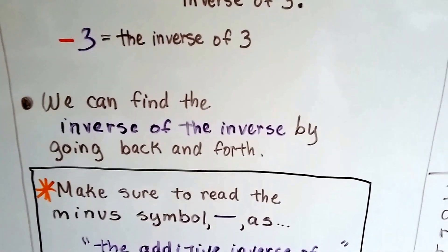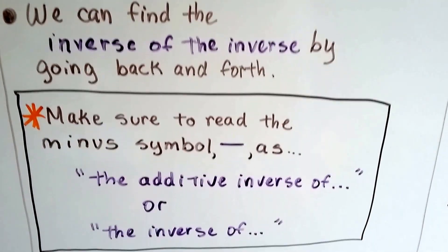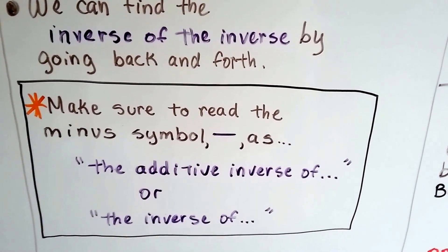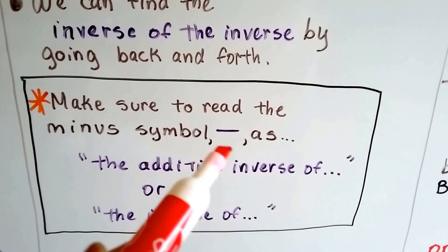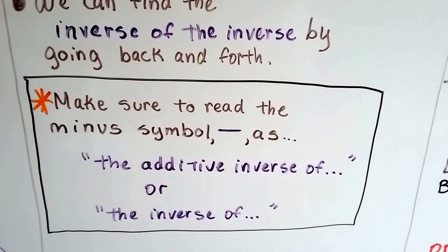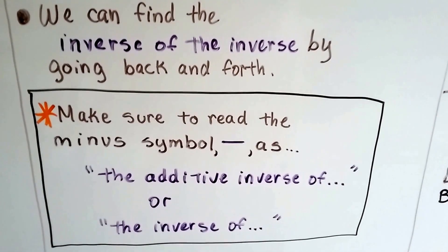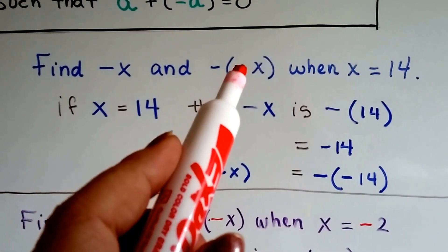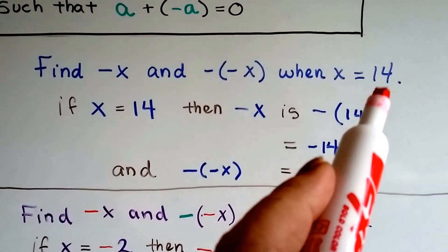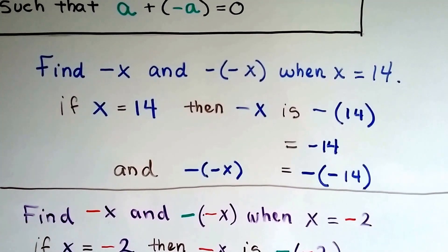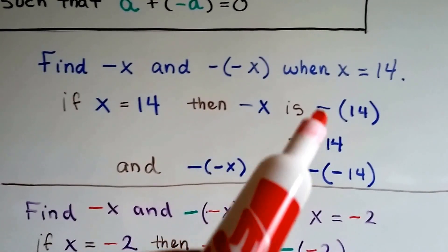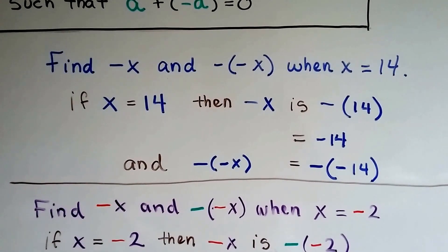We can find the inverse of the inverse by going back and forth. Just make sure to read that minus symbol — this negative symbol — as 'the additive inverse of' or 'the inverse of.' Don't call it a negative or a minus. Get used to calling it 'the inverse of' and that will make your life a lot easier. So, if we need to find the inverse of x and the inverse of the inverse of x when x equals 14 — 14 is positive.